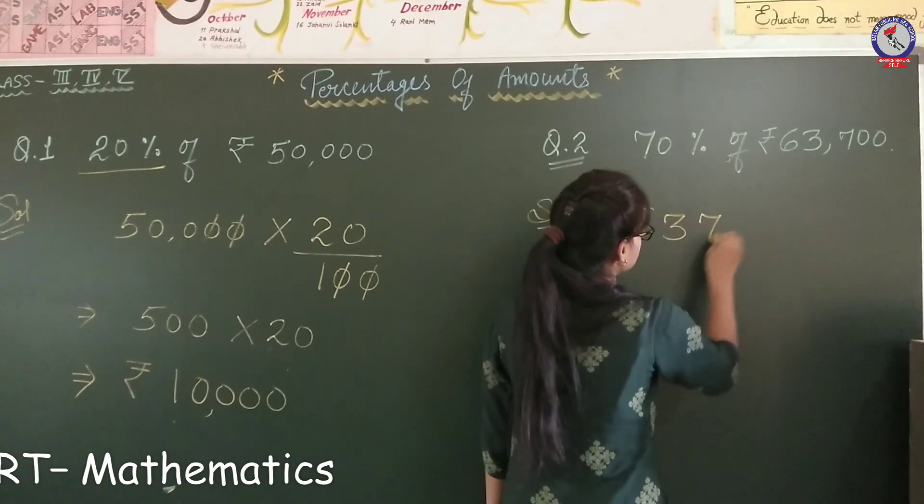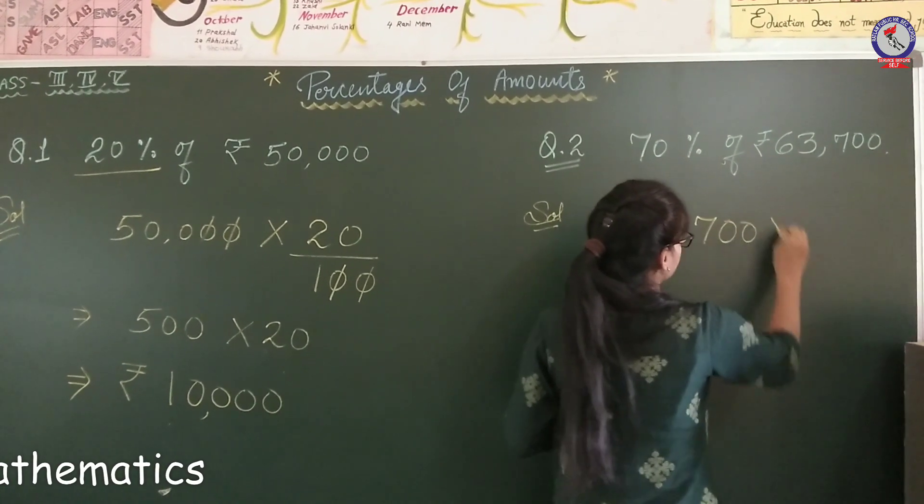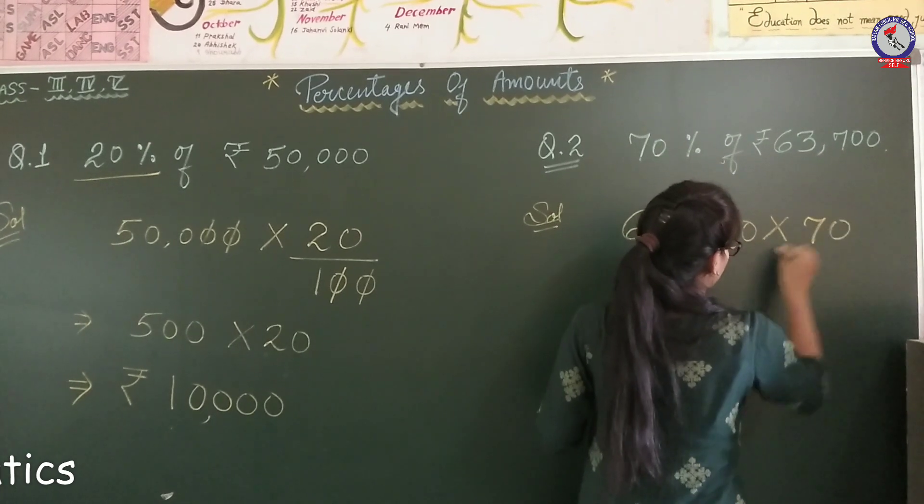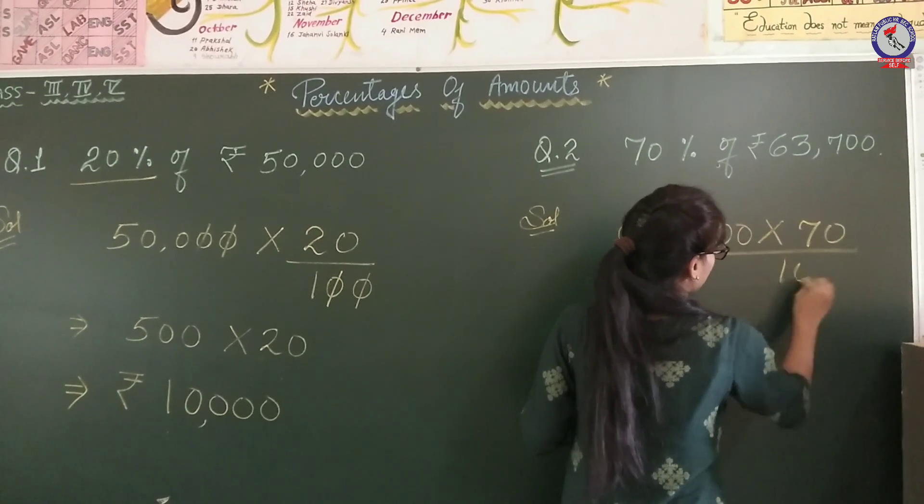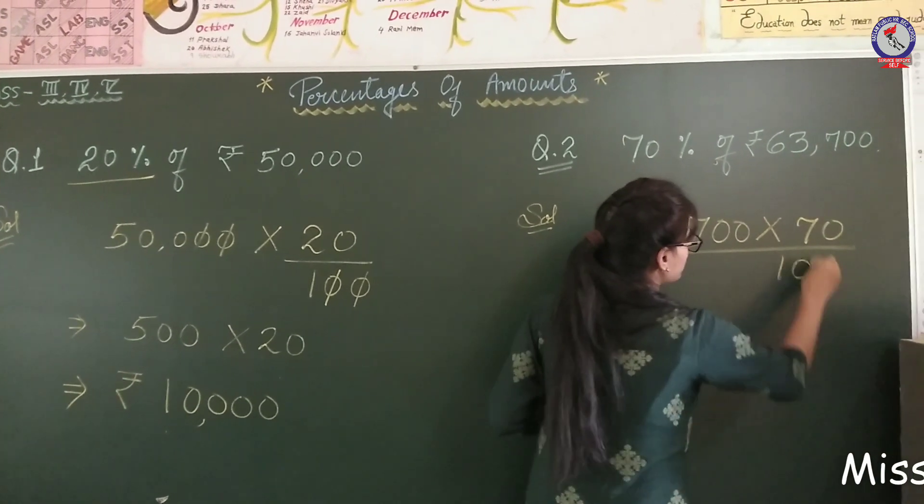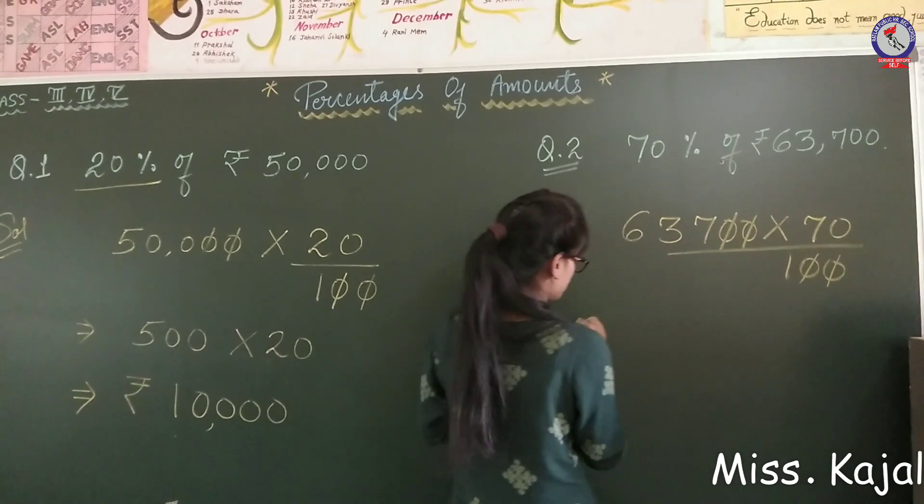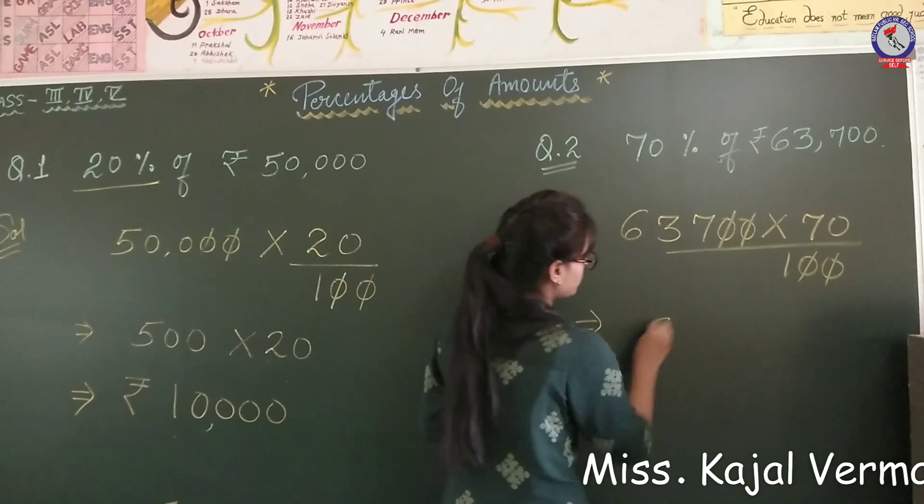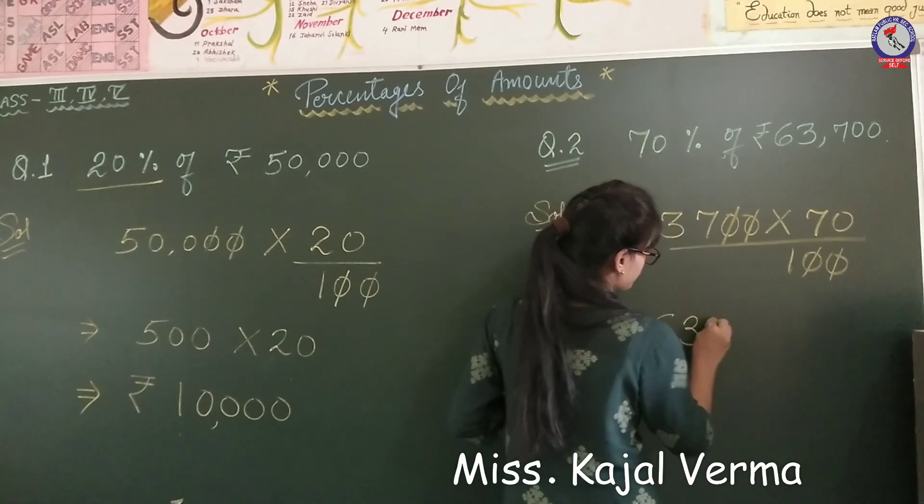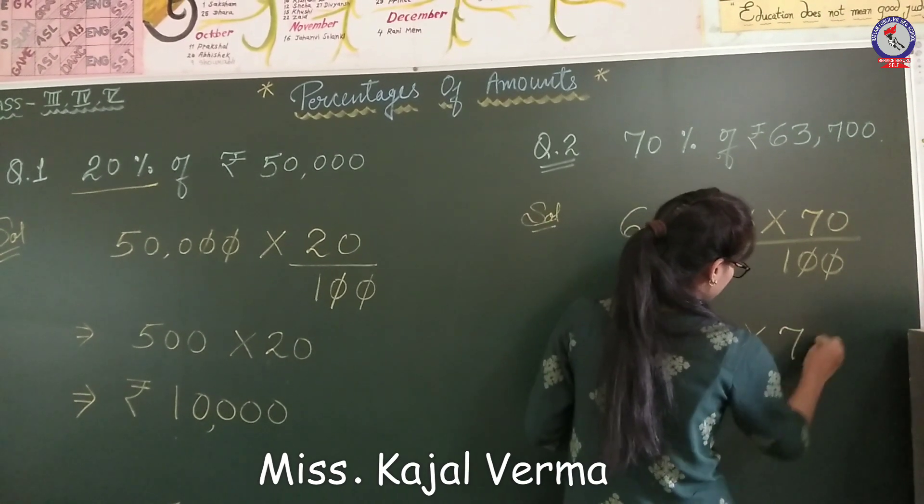We will multiply 63,700 with 70 and divide by 100. Again, we cancel the zeros. Then, only 637 remains, and 70.